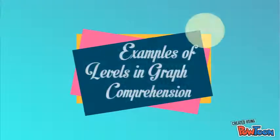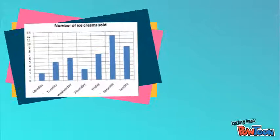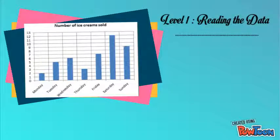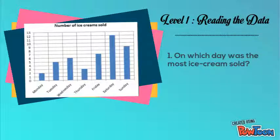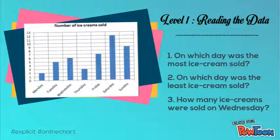Now that you have understood the three levels of graph comprehension, let us take a look at an example. Let us begin with level 1, reading the data. This bar graph shows the number of ice creams that were sold in a week. On which day was the most ice cream sold? On which day was the least ice cream sold? How many ice creams were sold on Wednesday?